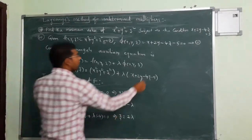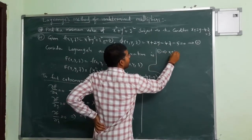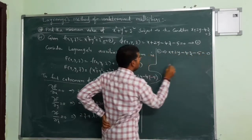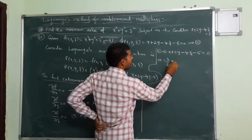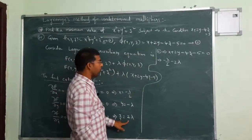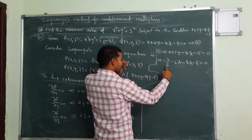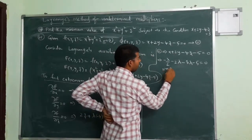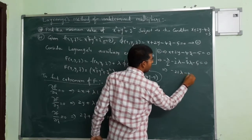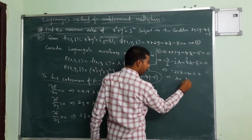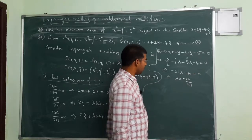Now in step 2, we have to put these three values in the condition. From equation 2: x plus 2y minus 4z minus 5 equals 0. Substituting: minus lambda by 2 plus 2 times minus 2 lambda minus 4 times 2 lambda minus 5 equals 0. After taking LCM of 4, we get minus 21 lambda minus 10 equals 0, so lambda equals minus 10 by 21.